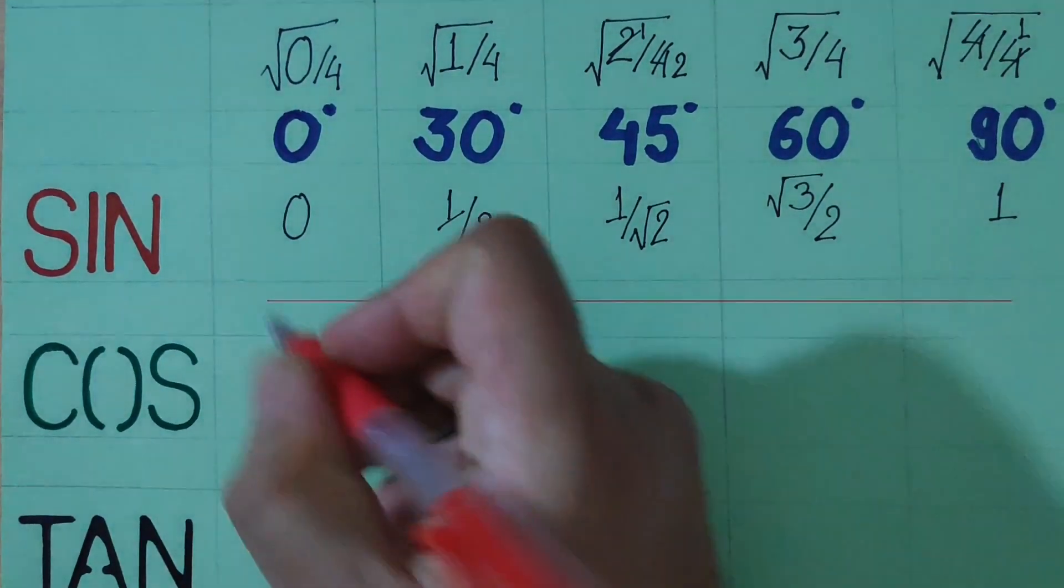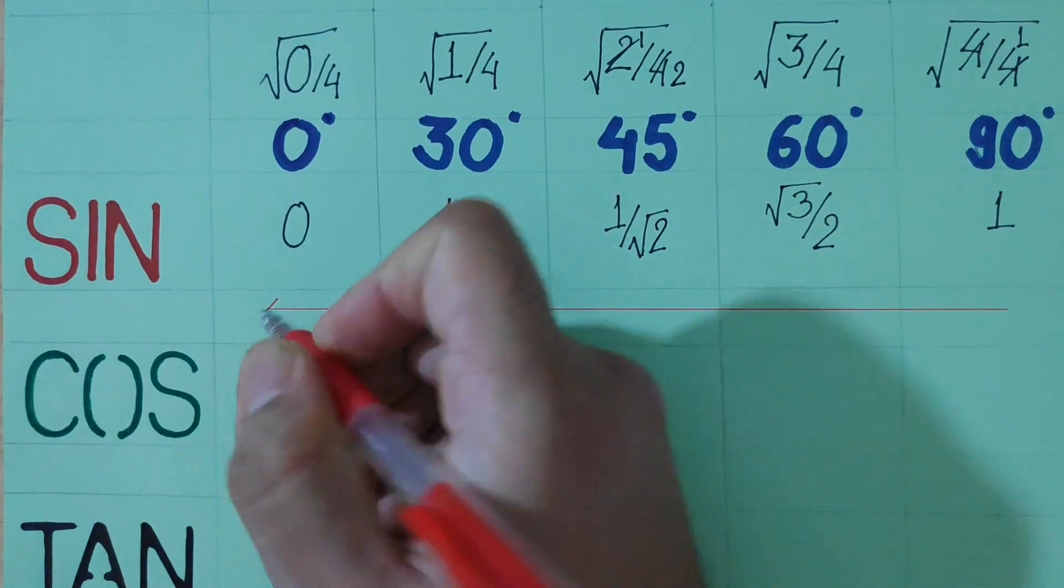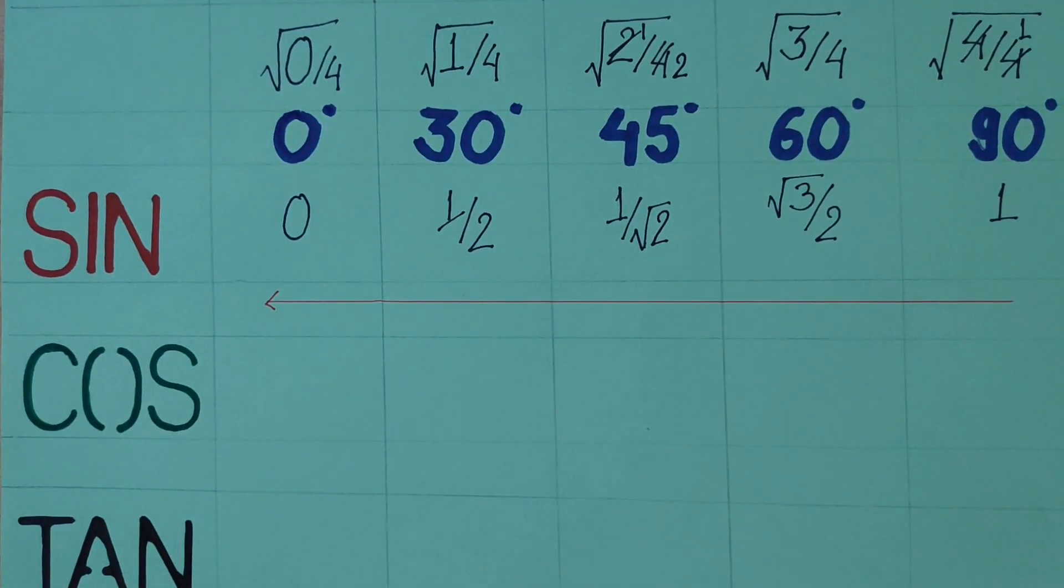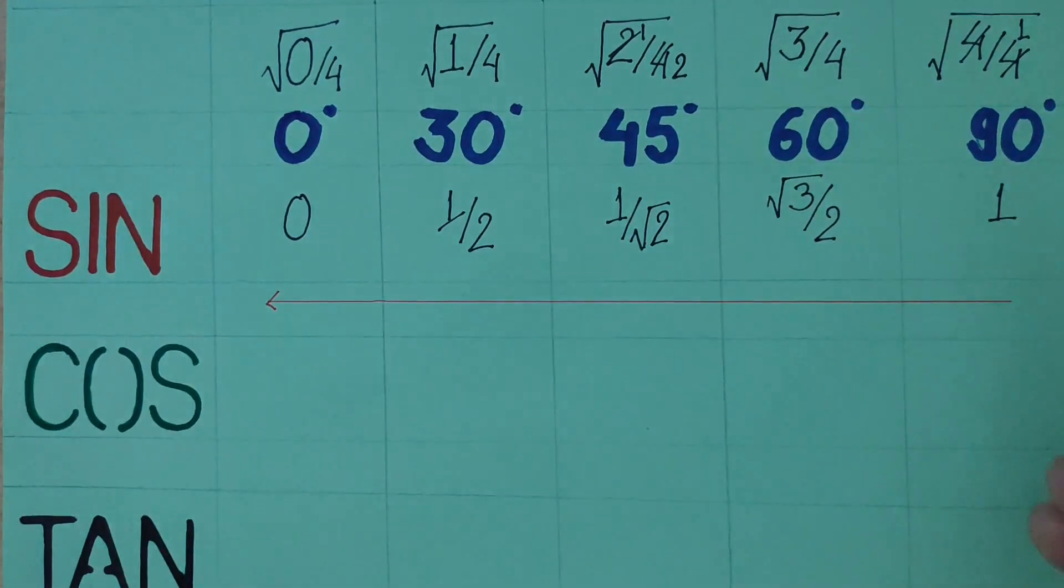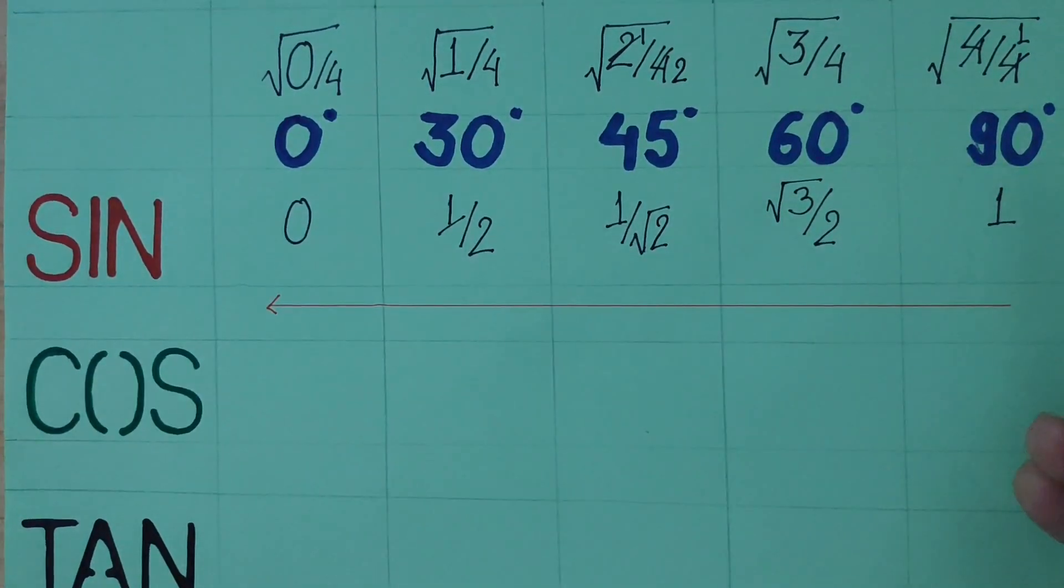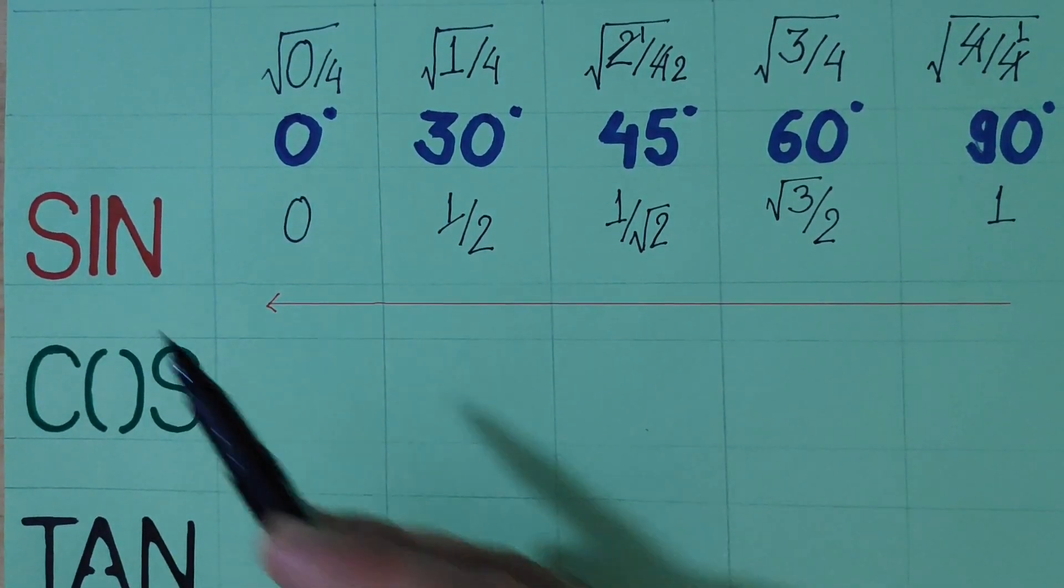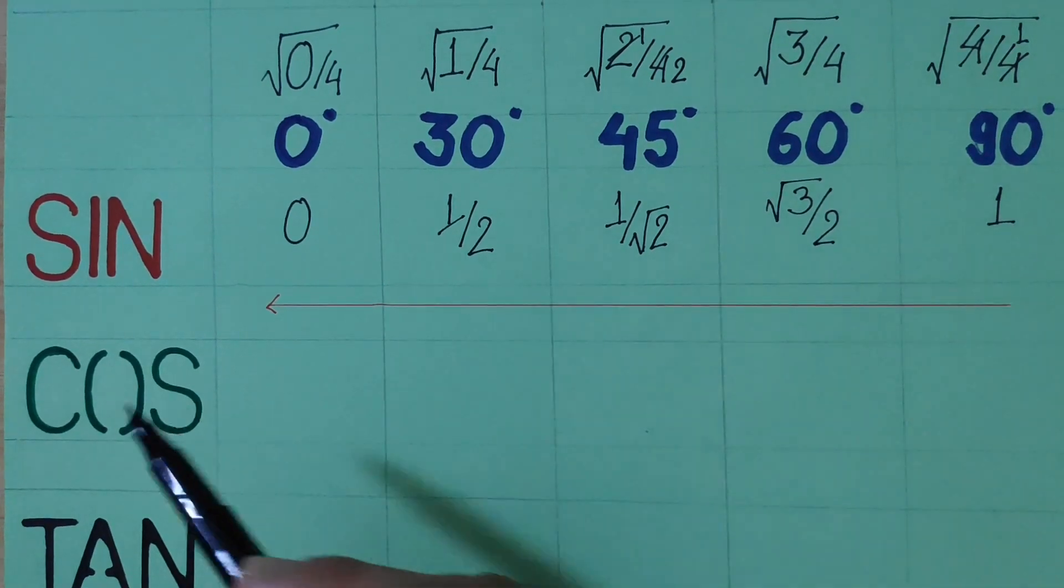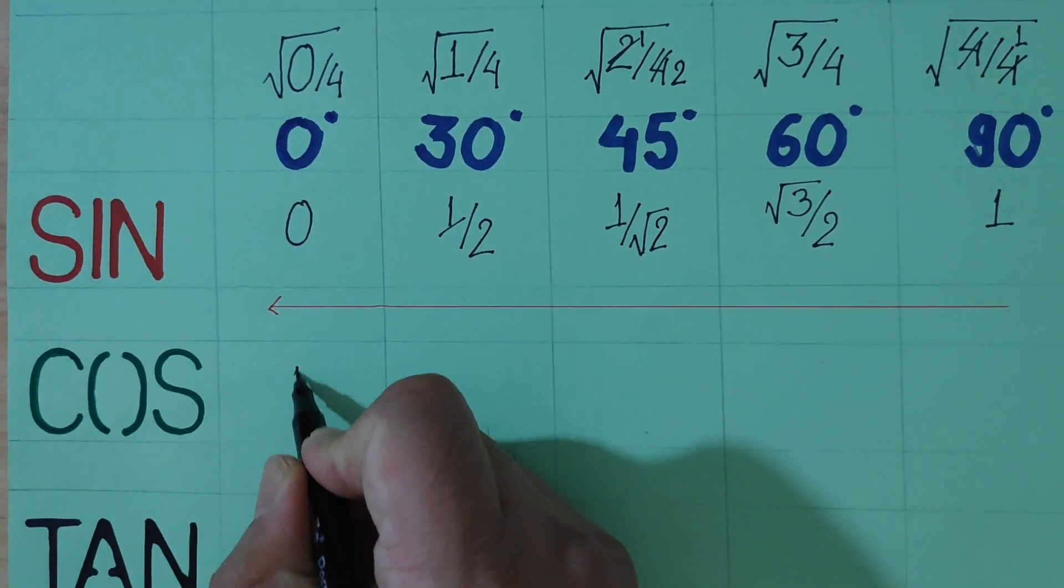So here we are. Sin 90 is equal to cos 0. Sin 90 is equal to 1 and cos 0 is equal to 1.